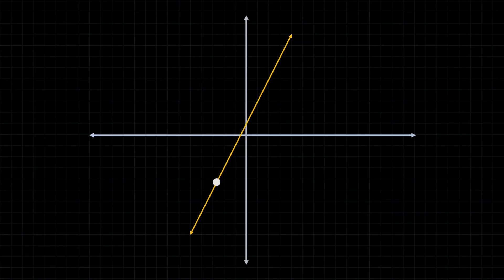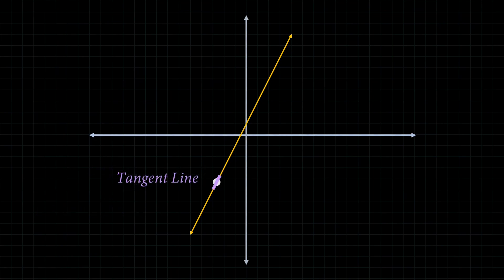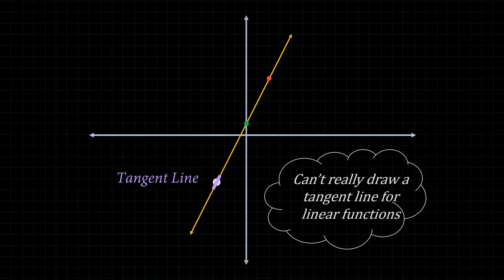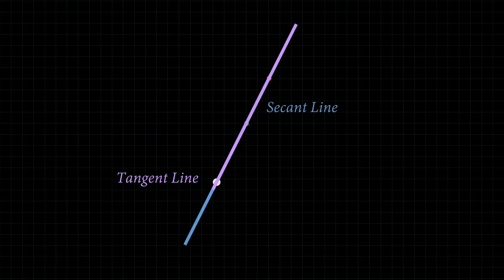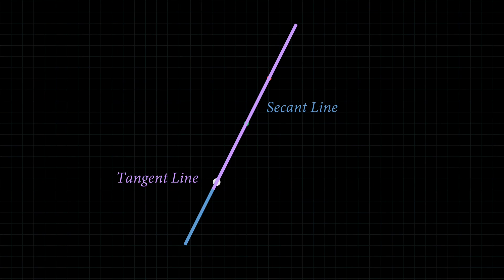What if we want to find the slope at a particular point on this linear function — the instantaneous slope? We would need to draw a tangent line. But you might notice that's kind of odd, because we can't really draw a tangent line for a linear function; we almost always draw tangent lines for curved functions. Nonetheless, the imaginary tangent line for any point looks identical to the secant line — if you stretch them both out, they completely overlap. This means the slope of the tangent line equals the slope of the secant line, which equals the slope of the linear function.